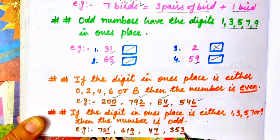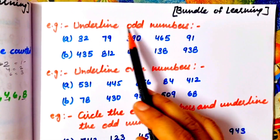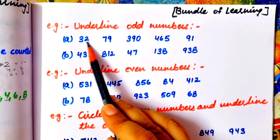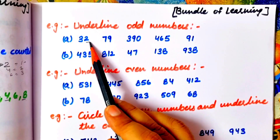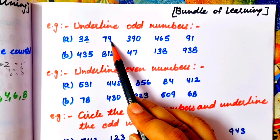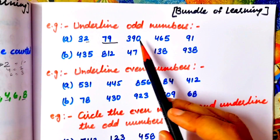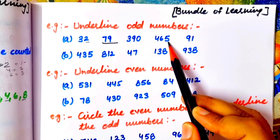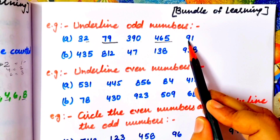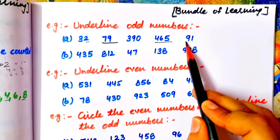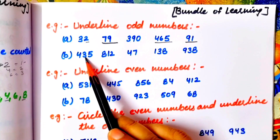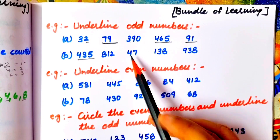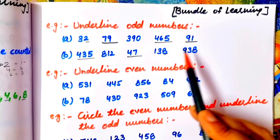Now we have some numbers where we need to underline the odd numbers. Number 32: ones place is 2 — this is not an odd number, it is even. Next, 79: ones place is 9 — this is an odd number, so we underline it. 390: ones place is 0 — even number. 465: ones place is 5 — odd number, underline. 91: ones place is 1 — odd number, underline. 435: ones place is 5 — underline. 812: ones place is 2 — even. 47: ones place is 7 — odd number. 138: ones place is 8 — even number. 938: even number.